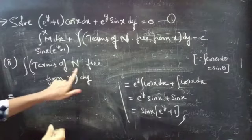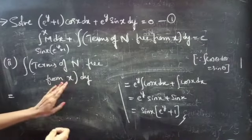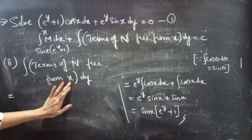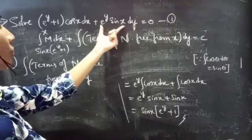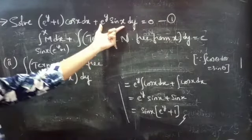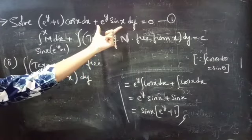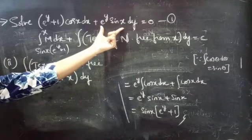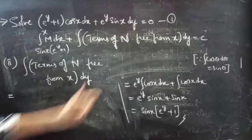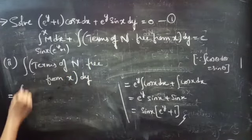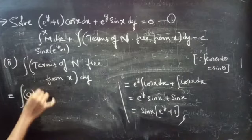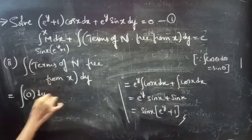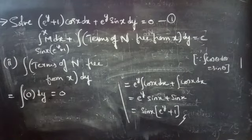We have to find the terms of N which are free from x. This is our N — we don't have any term which is free from x. So we will take this integral equals to 0.